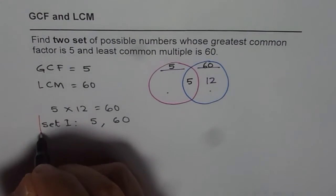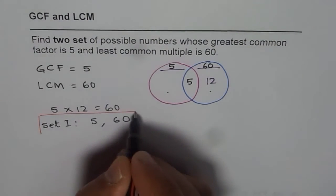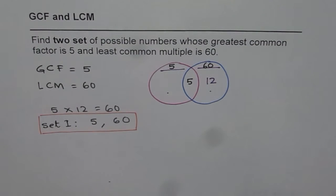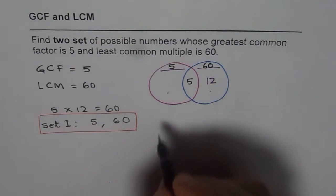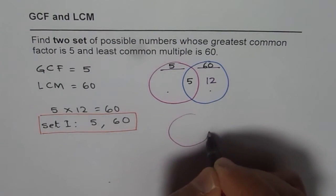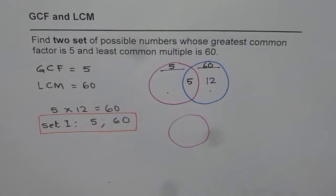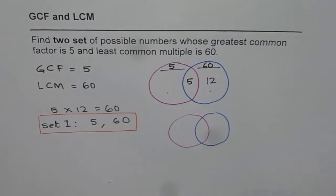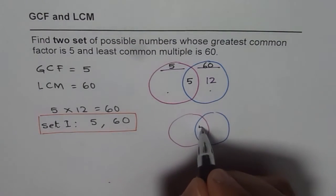So let me highlight this for you. Now the question is to find the second set. How to find the second set? Let's redo this question. So we have one set here, the other set, and we know that the greatest common factor is 5.